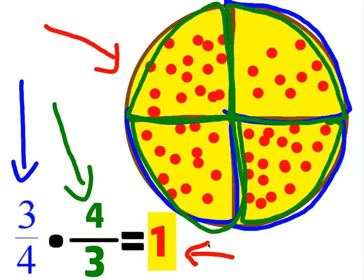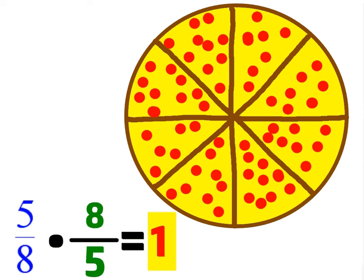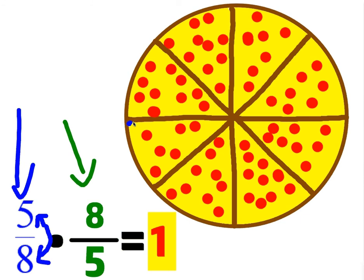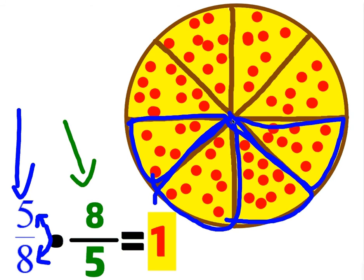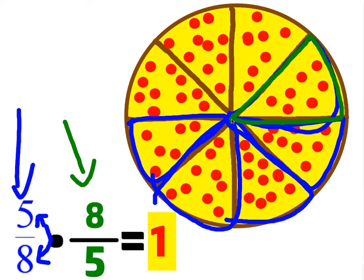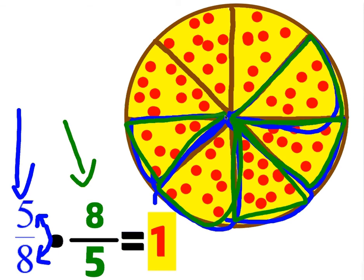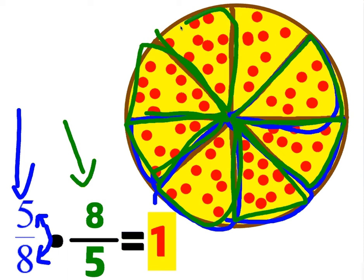Notice all we're doing is multiplying by the flipped version of the original. If I start with 5 eighths and multiply by its flipped version — if I flip this around, I end up with 8 fifths. Let's show this on the pizza again. 5 eighths of the pizza would be 1, 2, 3, 4, 5. Now if I take a fifth of that, this would be 1 fifth of the 5 eighths, right? But if I take 8 of those fifths, it would be 1, 2, 3, 4, 5, 6, 7, 8. And we end up with the whole pizza again.